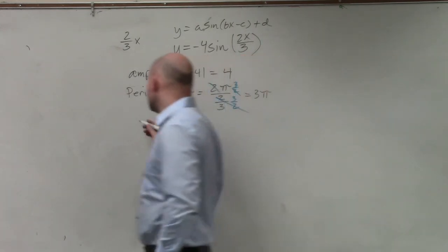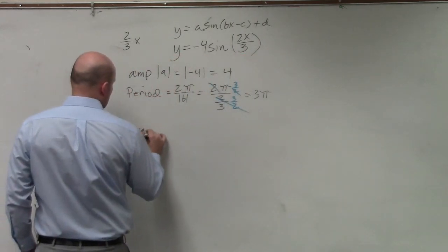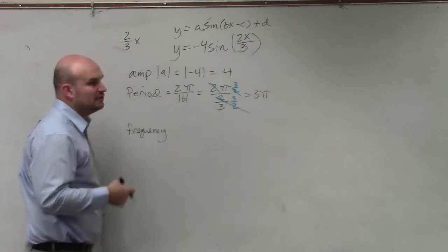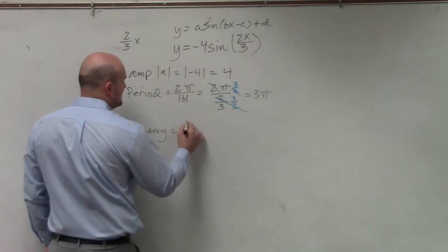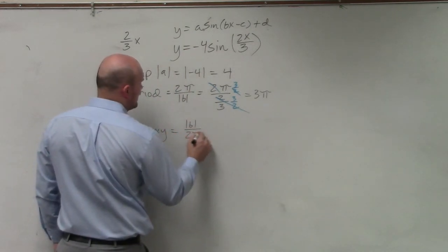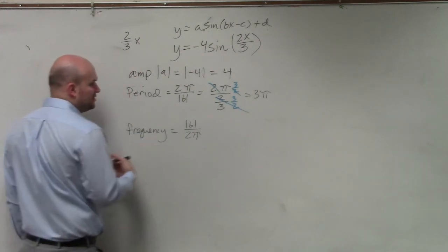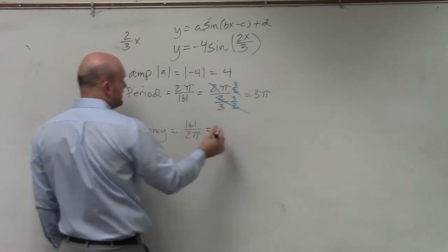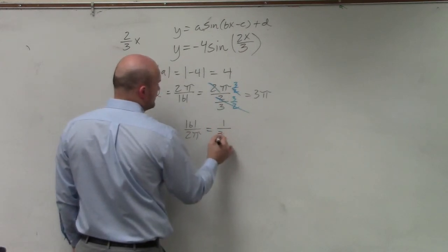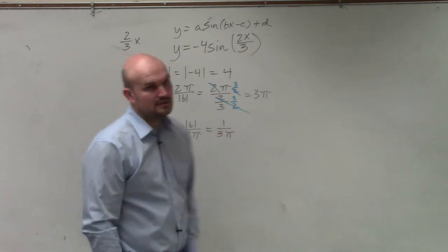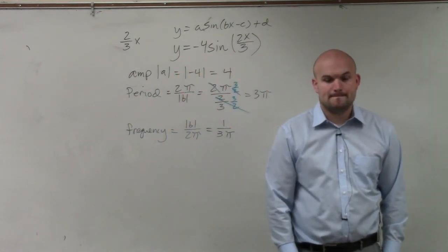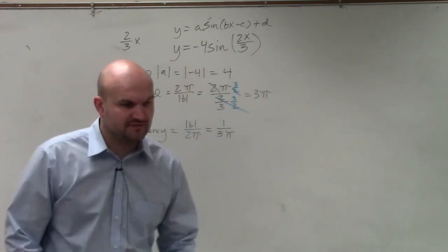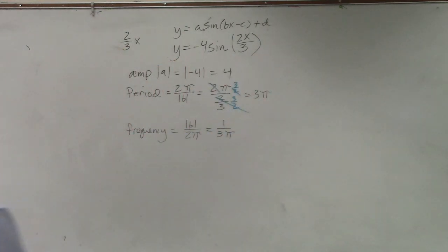Last but not least is frequency — how many cycles the graph can complete within a given time interval. The frequency is the absolute value of b divided by 2 pi, which is basically the reciprocal of the period. In this case that's going to be 1 over 3 pi, because they are reciprocals of one another. And that's all you had to do for problems 13, 14, 15, and 16. Anybody have any further follow-up questions on those?